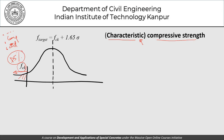This is a designer's concept. At site, we are concerned with characteristic strength, but we design the mix for what is called the target strength — that is FCK plus 1.65 times sigma. Assuming a normal distribution, which has two parameters — mean and standard deviation — this factor 1.65 comes from the fact that the area on one side of that distance is 5%. So F_target = FCK + 1.65 × standard deviation.